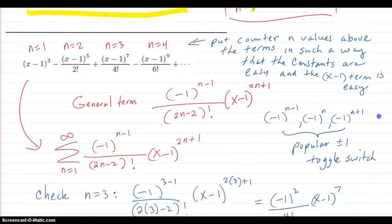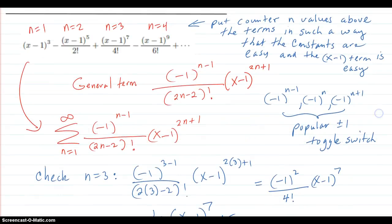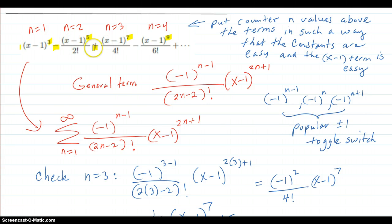Here's another example — this one is a little bit more difficult. The exponents are jumping, but they're jumping by odd numbers, so that's like a 2n minus 1 or 2n plus 1 type of thing. And the signs are toggling plus, minus, plus, minus — so it has a negative-1 type toggle.